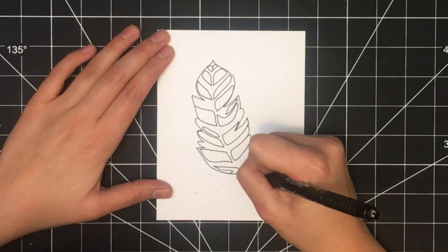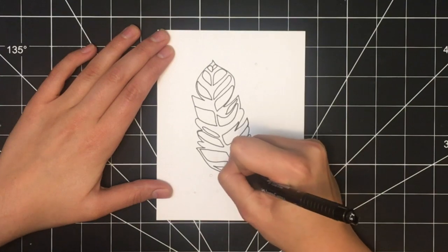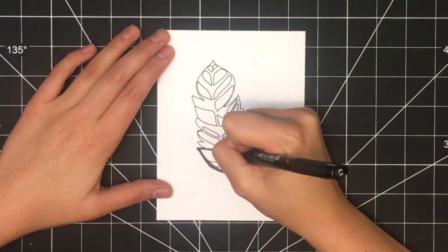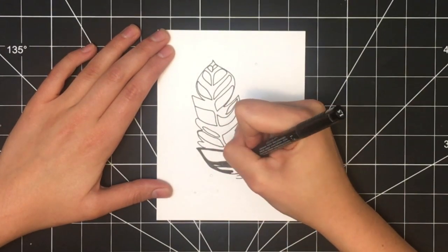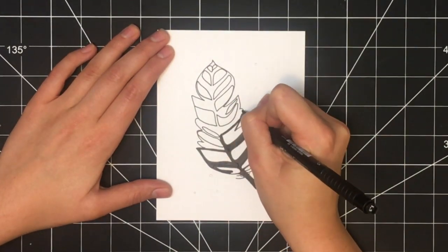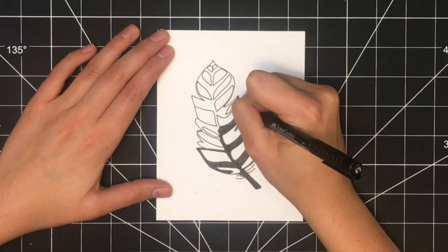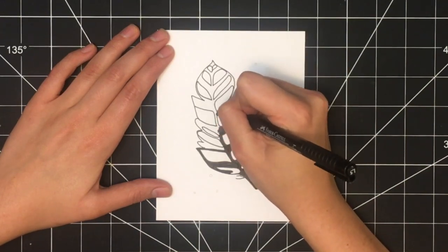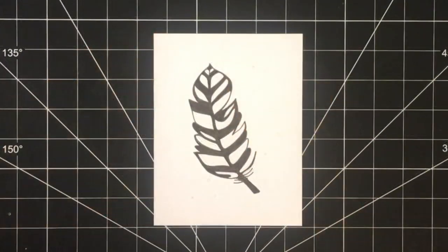The next step is to color in part of these sections that you just outlined black. For this step, I switched over to a slightly thicker black pen just to make this a little bit quicker. However, you could use the same pen that you used to outline it. It will just take you a little bit longer because it's thinner.